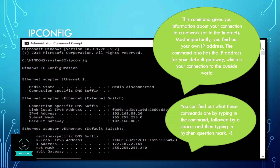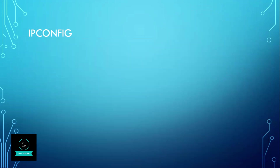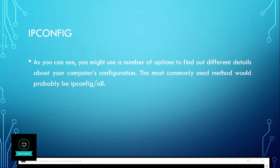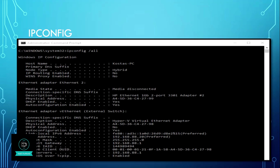You can find out what these commands are by typing in the command followed by a space and then typing in hyphen question mark. As you can see, you might use a number of options to find out different details about your computer configuration. The most commonly used method would probably be ipconfig slash all, which lets you check all the details of your network.